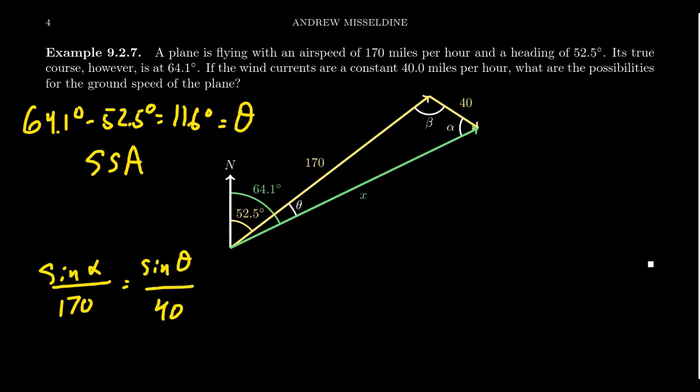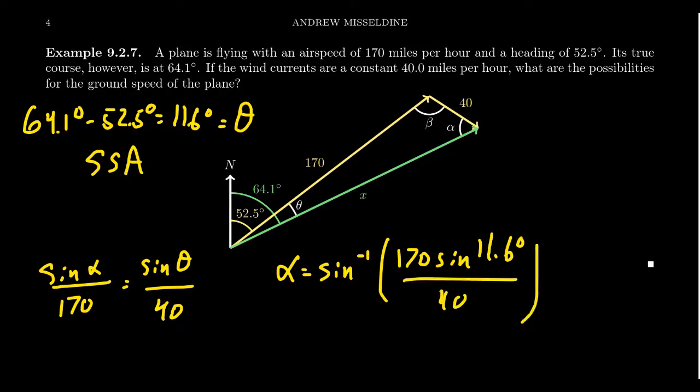So we're going to take sine of alpha over 170 and set that equal to sine of theta over 40. To solve for alpha, we're going to multiply both sides by 170 and take arc sine. So alpha is equal to arc sine of 170 times sine of 11.6 degrees over 40. When you put this in the calculator, you're going to end up with sine inverse of this quantity. This will give you, your calculator will give you 58.7 degrees.